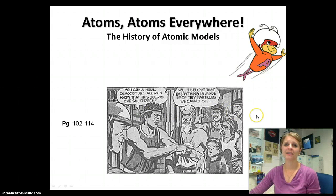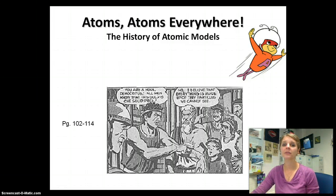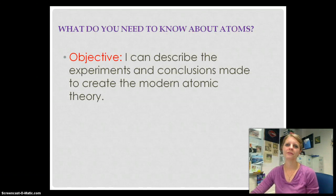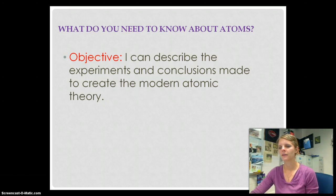Welcome to your history lesson on the atomic theory. Atomic theory is the idea of how we got from one theory of the atom to where we are today and what we know an atom looks like. We're going to start the history of the atomic models, and as we go through this, I want you to focus on one key part: being able to describe the experiments and the conclusions made that created how we look at the atom now.